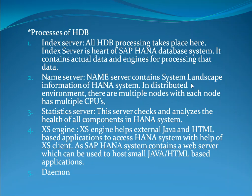Name Server: contains the system landscape information of the HANA system. In a distributed data environment there are multiple nodes, and each node has multiple CPUs. Statistics Server: checks and analyzes the health of all components in the HANA system. Access Engine: helps external Java and HTML-based applications to access the HANA system with the help of an access client, as SAP HANA contains a web server which can host small Java and HTML-based applications.